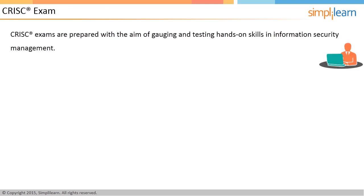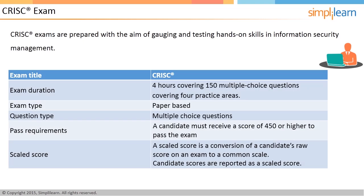The CRISC exam questions are prepared with the intent of gauging and testing hands-on skills in IT risk and control. The CRISC exam is paper-based, consisting of 150 multiple-choice questions covering four practice areas, which must be completed within a four-hour period. All questions have four options and are intended for one correct answer. ISACA uses a scale from 200 to 800 when grading the examination, and the minimum pass mark for the CRISC exam is 450 marks.